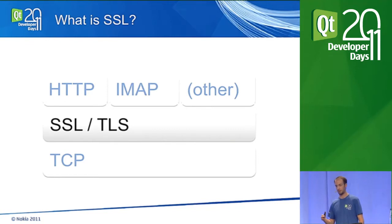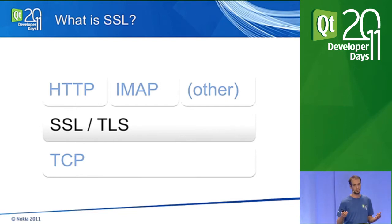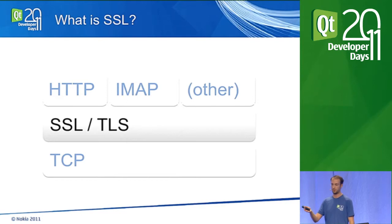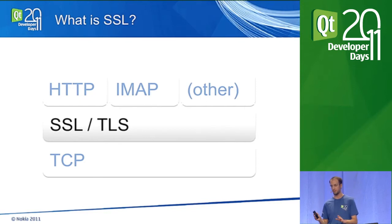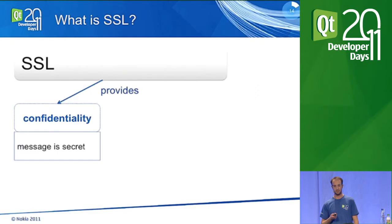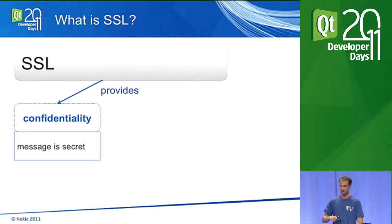SSL is sort of transparent to use — it sits on top of TCP. On top of SSL you can use HTTP, as you probably know with HTTPS addresses in your browser bar. You can use any application layer protocol on top of SSL, like IMAP or any other protocol. There's also a version of TLS that works over UDP, but I won't cover that here.